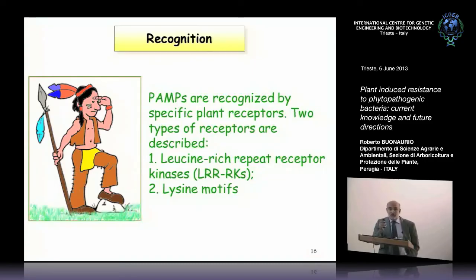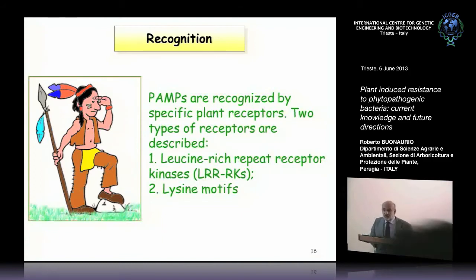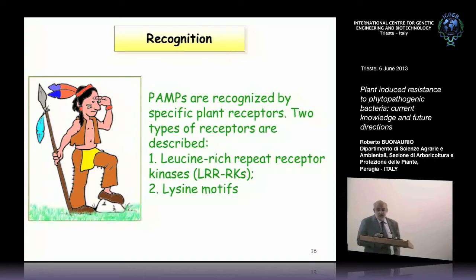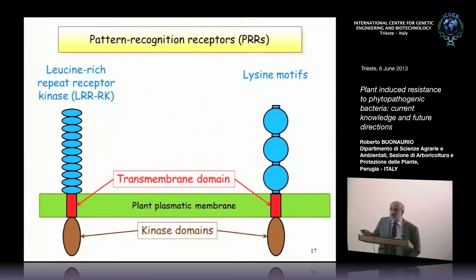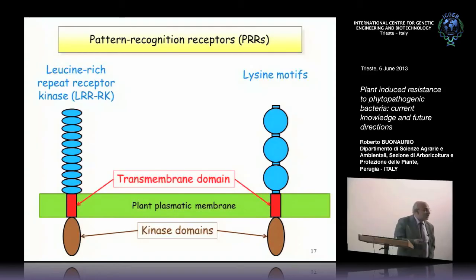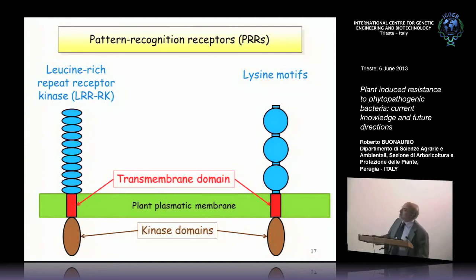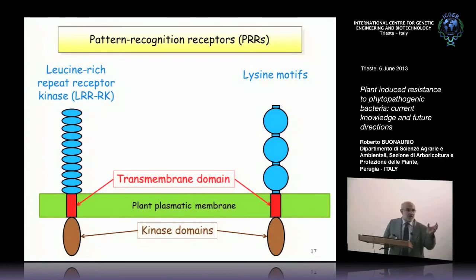Plants are able to recognize PAMPs through specific plant receptors. Two types of receptor are described: leucine-rich repeat receptor kinases and leucine-rich repeat proteins. Both types have a kinase domain inside the plant cell to transduce signals, a transmembrane domain to anchor to the membrane, and an external domain able to bind directly or indirectly to PAMPs or other foreign substances.